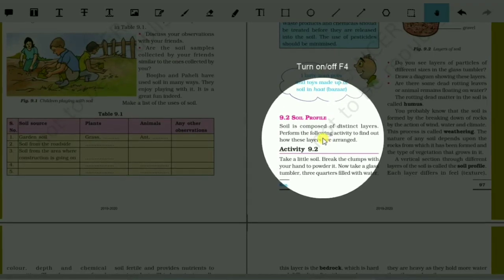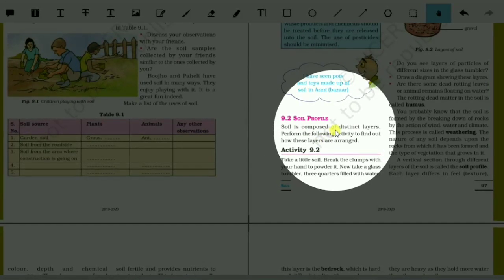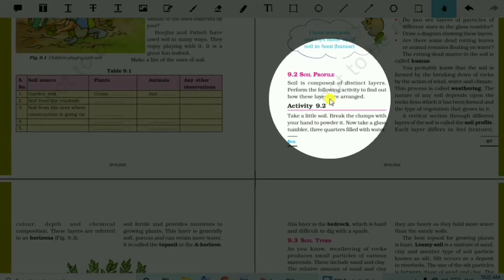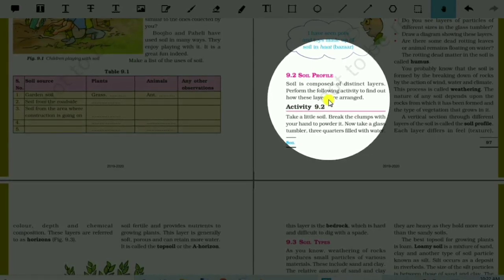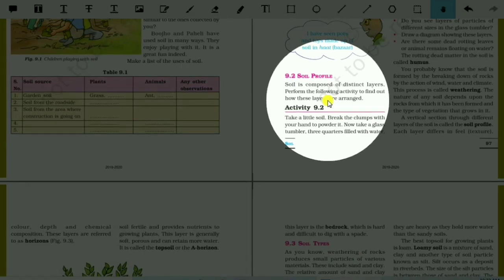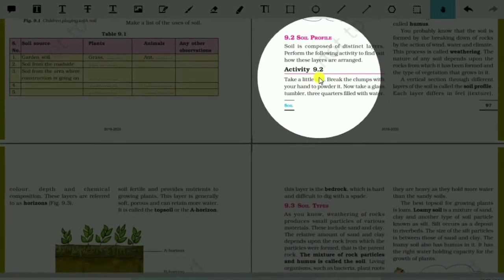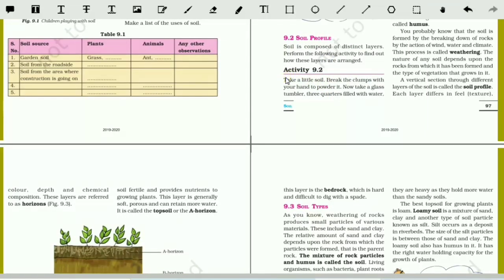Now we'll start. Today's topic is soil profile. Soil profile is the vertical section of the soil when cutting through it, showing different layers. Now activity 9.2—so read the activity 9.2.